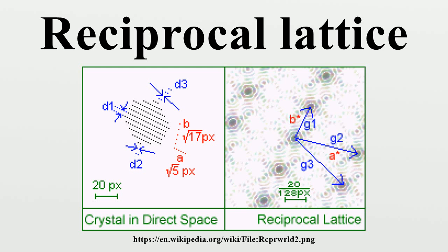While the direct lattice exists in real space and is what one would commonly understand as a physical lattice, the reciprocal lattice exists in reciprocal space. The reciprocal lattice of a reciprocal lattice, then, is the original direct lattice again.